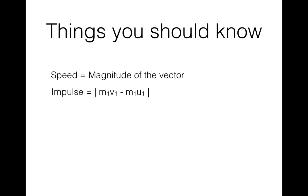The impulse is the change in momentum, and we always take the positive value of it. So the impulse is going to be the mass of one sphere multiplied by its velocity after the collision, minus the mass of the same sphere multiplied by that sphere's velocity before the collision.